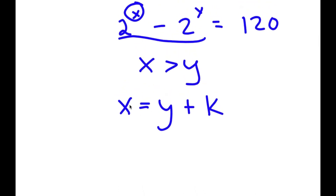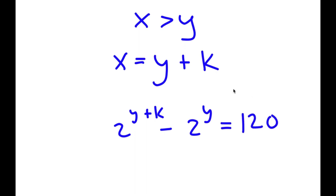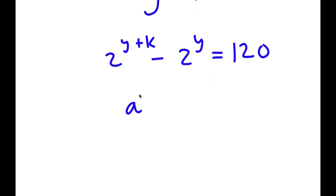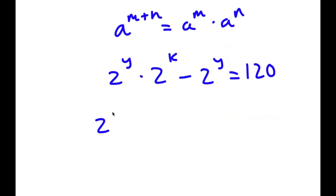If I replace x with y plus k, I get 2 to the power of y plus k minus 2 to the power of y is equal to 120. Since a to the power of m plus n equals a to the power of m times a to the power of n, I can write 2 to the power of y plus k as 2 to the power of y times 2 to the power of k. Factoring out 2 to the power of y gives 2 to the power of y times 2 to the power of k minus 1 is equal to 120.